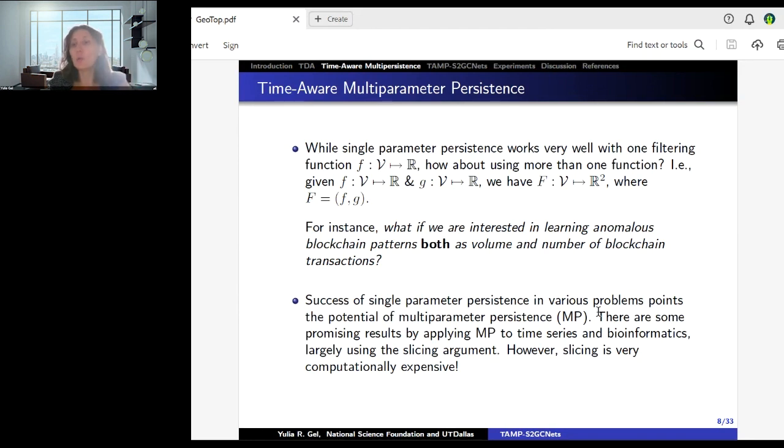You work with Bitcoin transaction graph and extract certain features. If you are lucky enough to get the right filtering function, you can identify ransomware families. Moreover, you can predict that some of the transactions are ransomware and similar patterns have been seen before. In case of Bitcoin, the two immediate candidates for filtering functions will be volume and number of blockchain transactions. How often do we trade and how much money do we send? They are both very important. But how to incorporate them together?